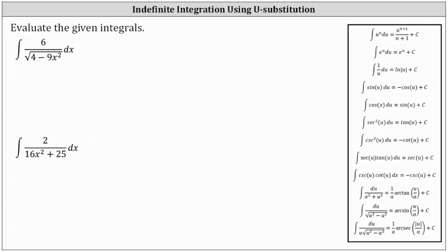We want to evaluate the given indefinite integrals. First, we have the integral of six divided by the square root of the quantity four minus nine x squared dx. Looking at the integration formula provided on the right, notice how the denominator fits the form where we have the integral of du divided by the square root of the quantity a squared minus u squared, which is equal to arc sine of u divided by a plus c.